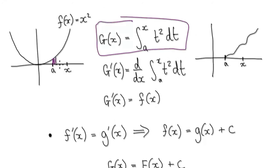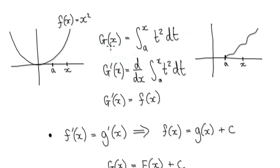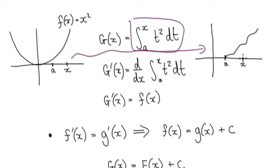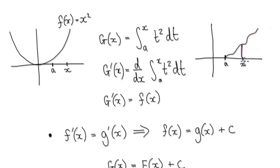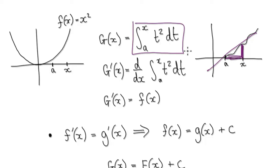If you want to find the area from A to x, you would define this function. When you define this function, it gives you this graph, which we've seen in the previous video. Now this graph is smooth and continuous, so if it's a smooth, continuous line graph, then you can differentiate it — you would get the height, divide it by the base, and then take the limit as h tends to 0.